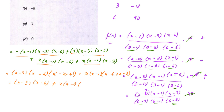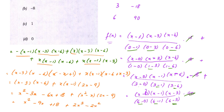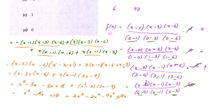Simplifying: the first factor gives (x−3)(x−6)(1) and the second gives x(x−1)(2x−9). Expanding (x−3)(x−6) = x²−9x+18, and x(x−1)(2x−9) = 2x³ − 2x² − 9x² + 9x. Combining all terms: f(x) = 2x³ − 10x² + 18.